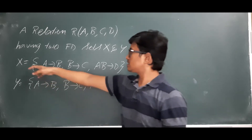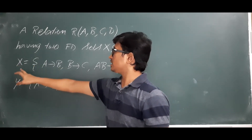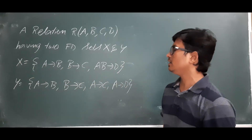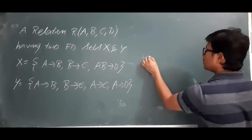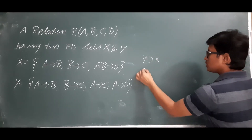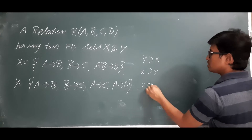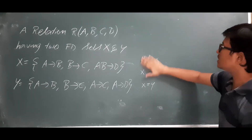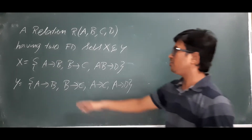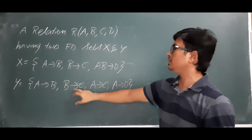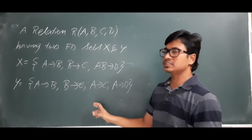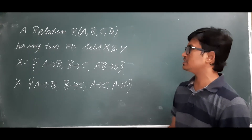Step one: can Y cover X? We can call it as Y covers X. The rule we discussed is: Y should cover X and X should cover Y, then we say Y is equal to X. So first I want to check whether Y covers X or not. Y covers X if all the FDs of X can be derived from Y — meaning they should be present either directly or indirectly.